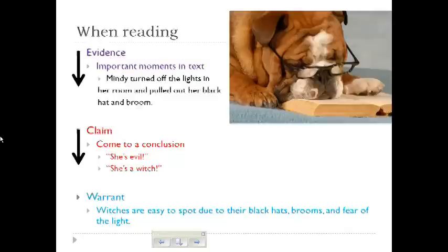Maybe it'll be more helpful if you see how it actually works. Since most teachers are going to require you to do this with reading, I'm going to use that as an example. You usually start with evidence — whatever you're reading in class — then develop a claim, and that claim and evidence is supported by your warrant. Let's say you're reading and you see this sentence: 'Mindy turned off the lights in a room and pulled out her black hat and broom.' From reading that, you might conclude that she's evil or she's a witch.